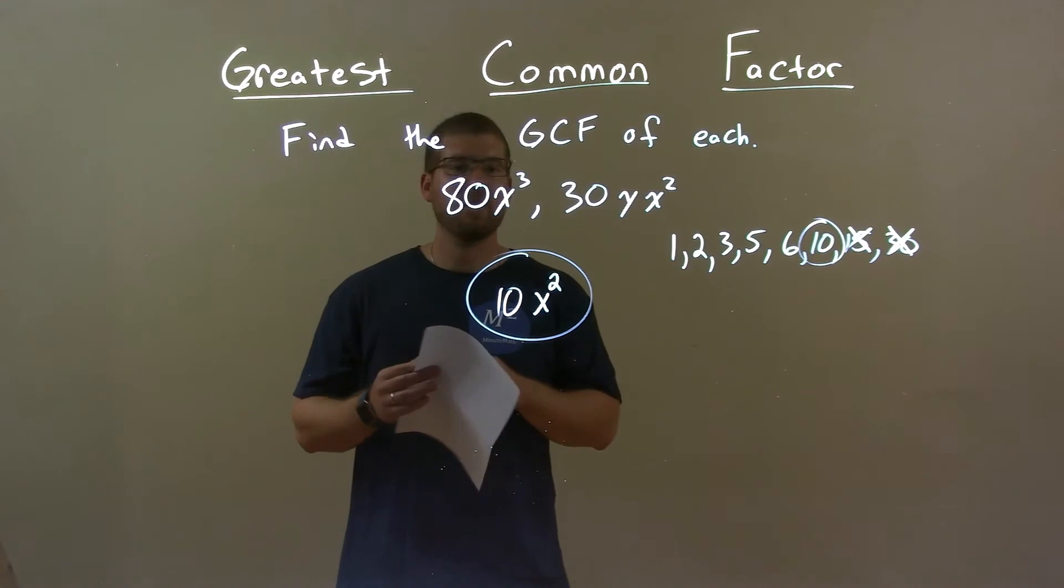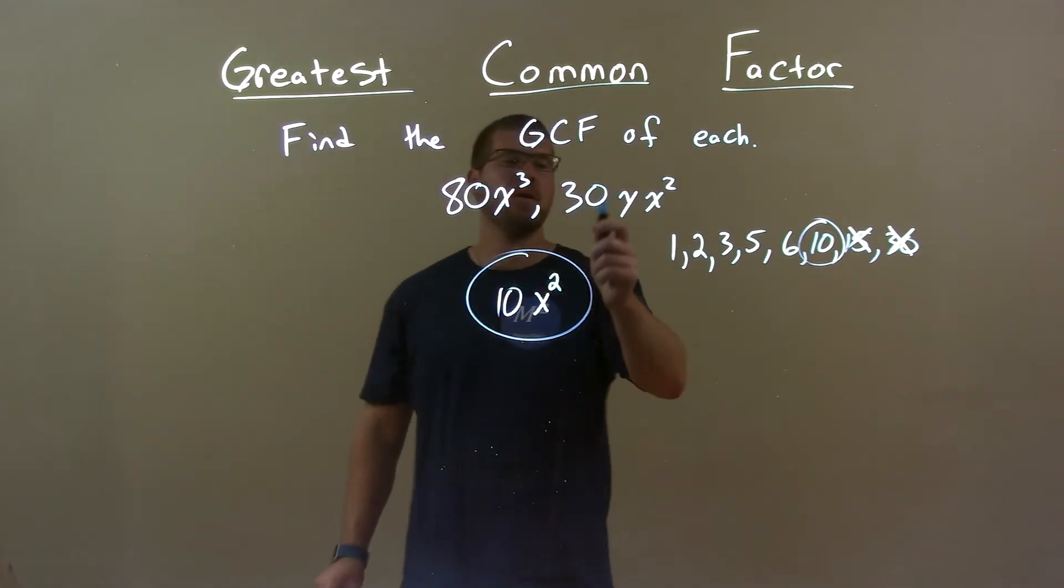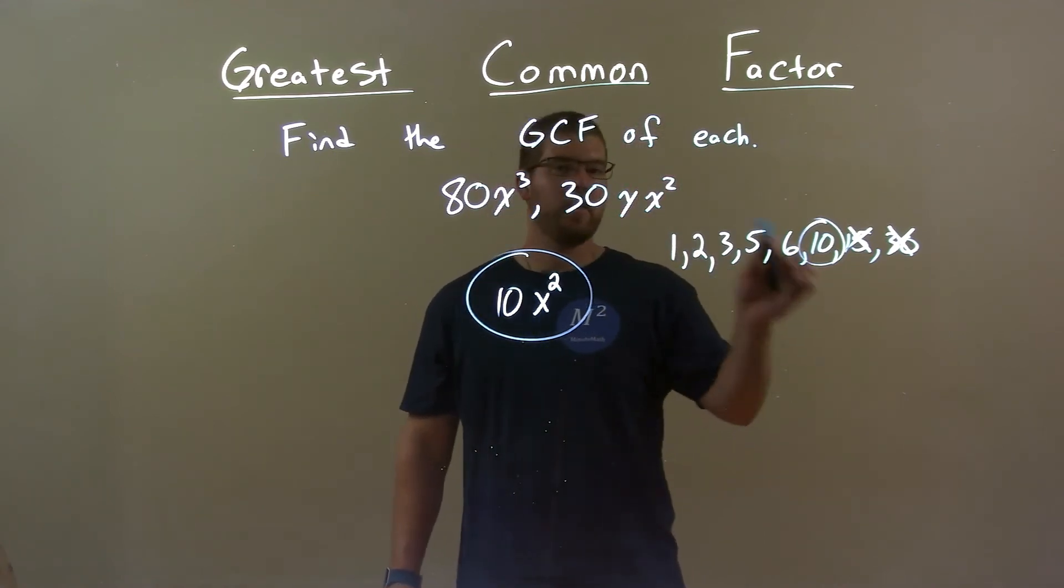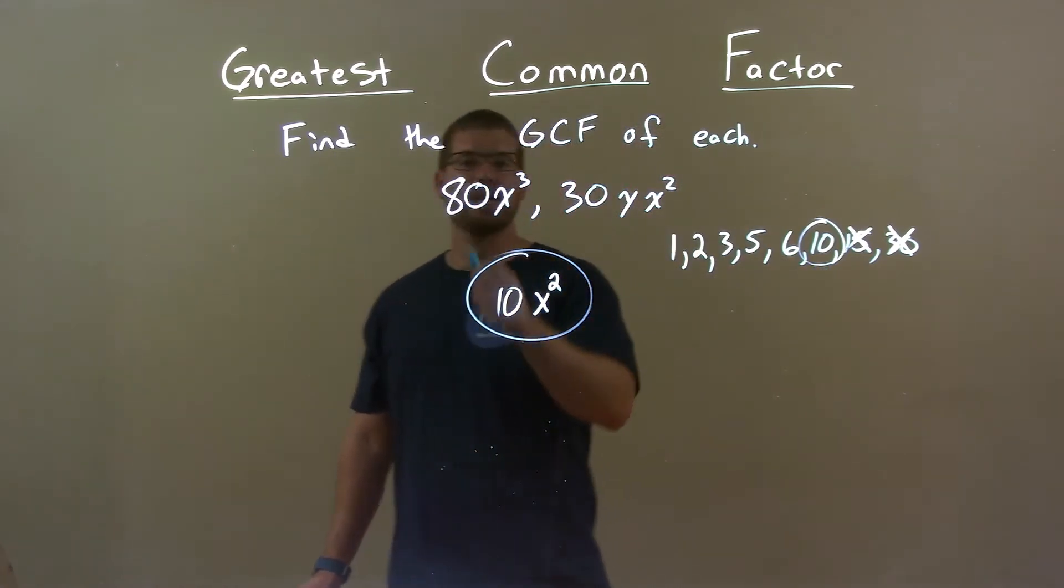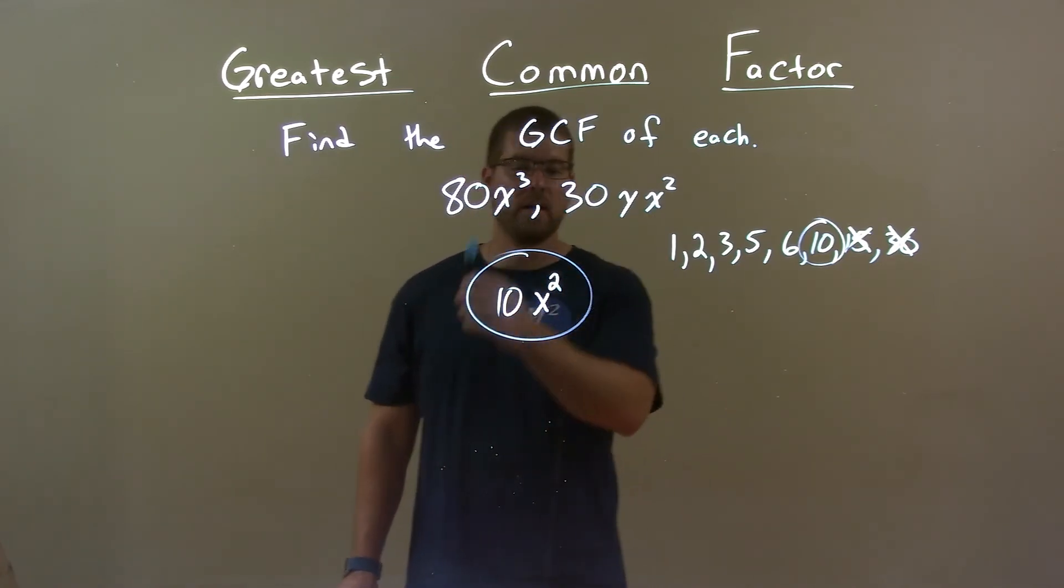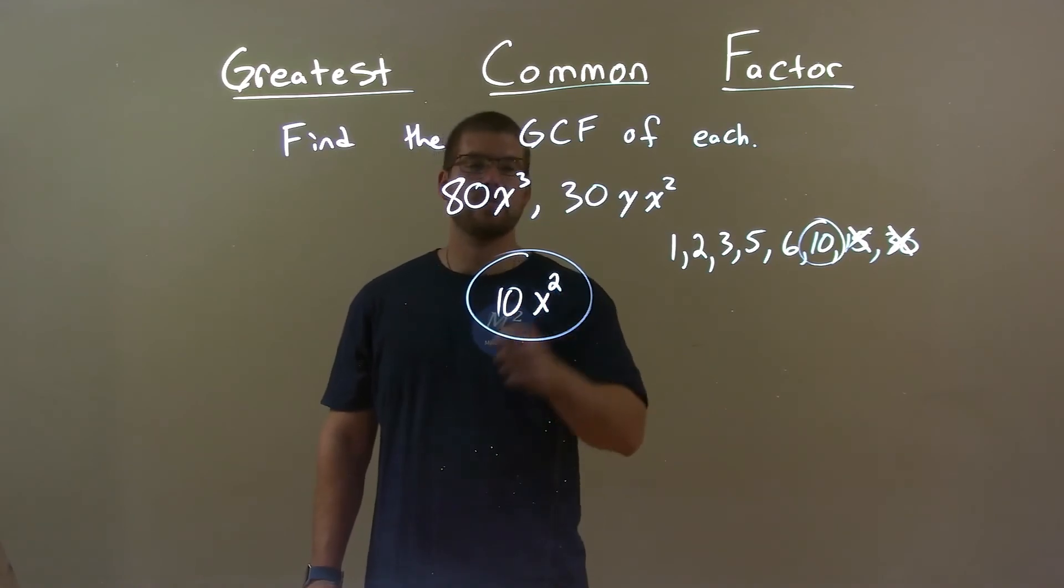So, quick recap. We're going to get 80x to the third power and 30yx squared, and we're going to find the GCF of them. Well, out of the numbers, we found all the factors of 30, that 10 was the largest one that also went into 80. These both share the variables of x squared, but no y's, and so my final answer here is just 10x squared.